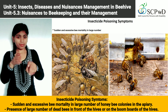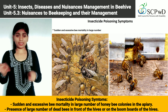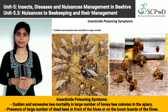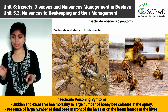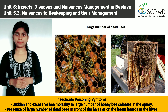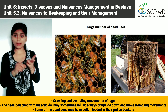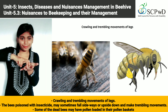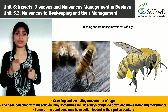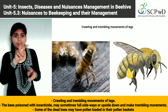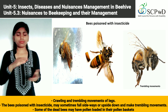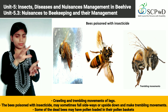Insecticide poisoning symptoms: sudden and excessive bee mortality in large numbers of honeybee colonies in the apiary; presence of large numbers of dead bees in front of the hives or on the bottom boards of the hives; crawling and trembling movements of legs; bees poisoned with insecticide may sometimes fall sideways or upside down and make trembling movements; and some dead bees may have pollen loaded in their pollen baskets.